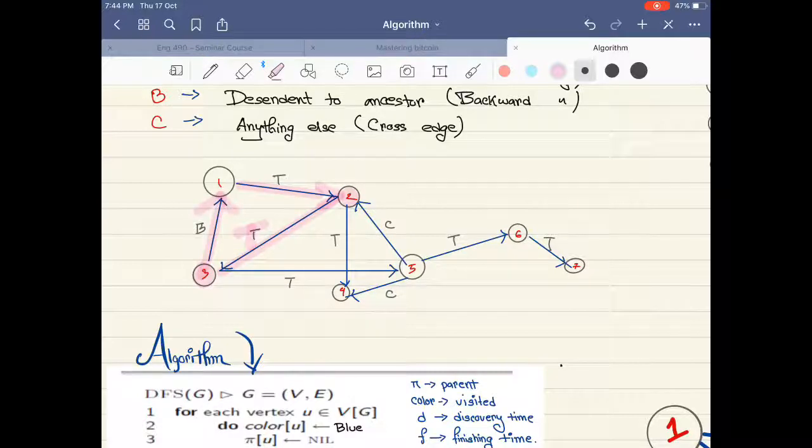From three we are going back to one. So three is like the child of one because we are traversing from here to here.